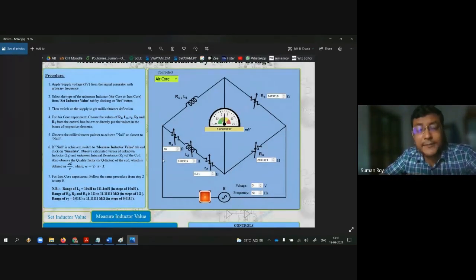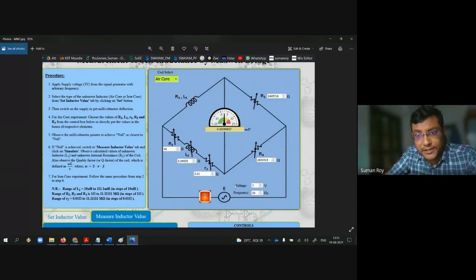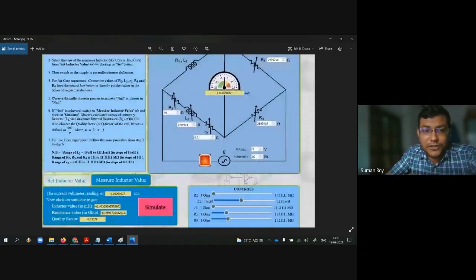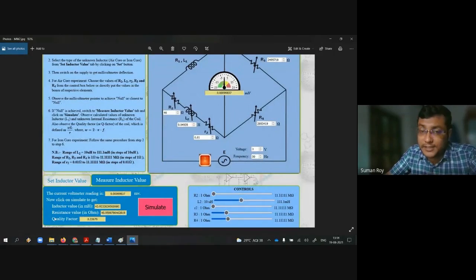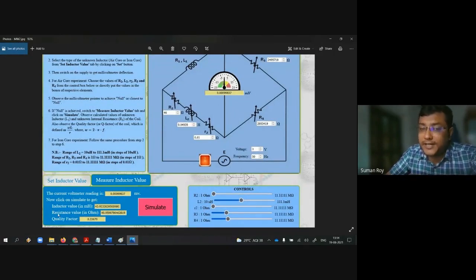Similarly, you have to take at least three readings. In the observation table, you have to write down your voltage (3 volts), your frequency (50 hertz), whether you have taken iron core or air core, and your true value. Then in each column, you have to mention R2, L2, small r2, R3, R4 values. You can also mention measured inductor value, measured resistance value, and calculate the error in case of inductance. That is the way to write your lab report.